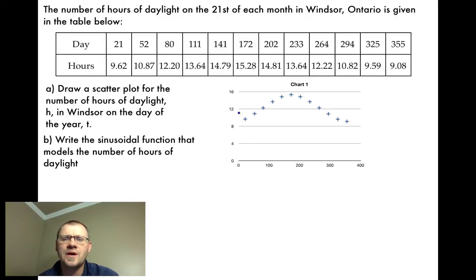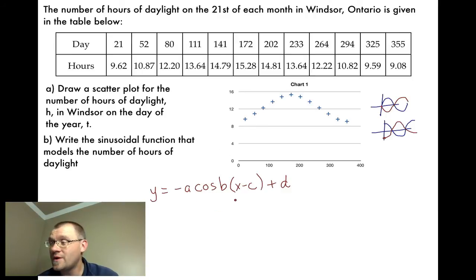B says write the sinusoidal function that models the number of hours of daylight. Well, first you need to take a look at this thing and does it look closer to sine or does it look closer to cosine? Hopefully when you're looking at it, you remember that sine starts and goes up and then down. Cosine starts up at 1, goes down and then back up. Now, negative sine could also look like a negative sine graph if it were to start at 0 and go down first. Likewise, negative cosine would start at negative 1 and then go up first. So this looks like a negative cosine graph and it's important for you to recognize that.